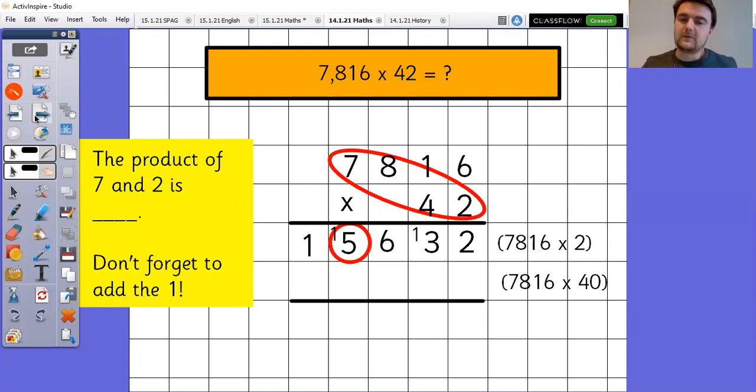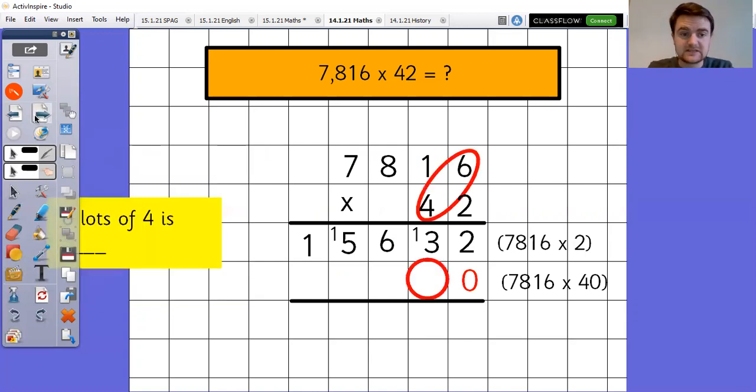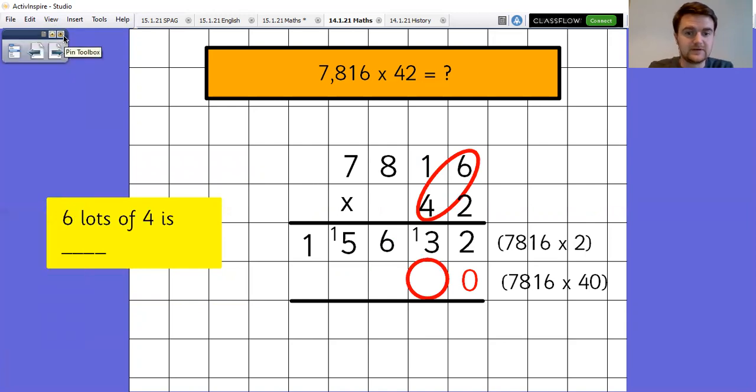Now, I know that for my next row, I'm going to be multiplying everything by 40. But to save myself a bit of a job, I can put that zero in there straight away. So that's what I'll do. And now I can just focus on multiplying the single digits together. So six lots of four is 24. I can't fit 24 in the tens column, so four goes in the tens column and two gets exchanged into the hundreds.